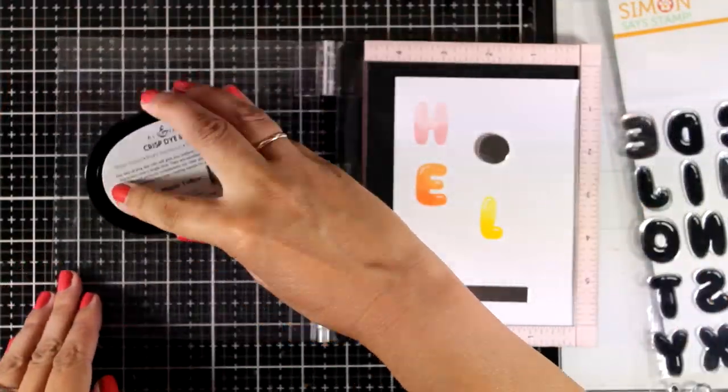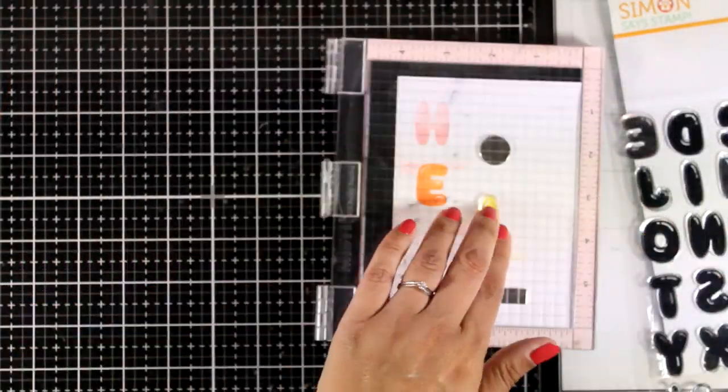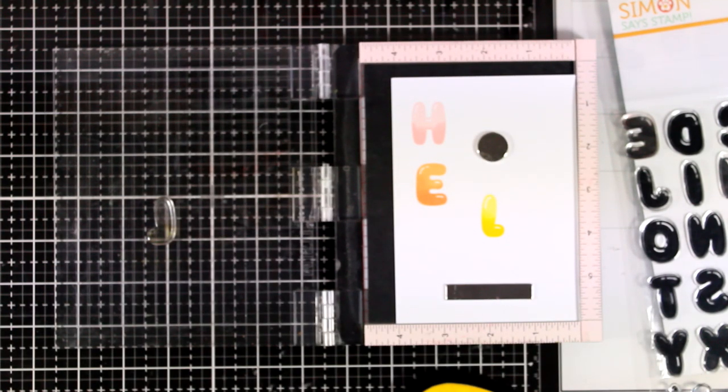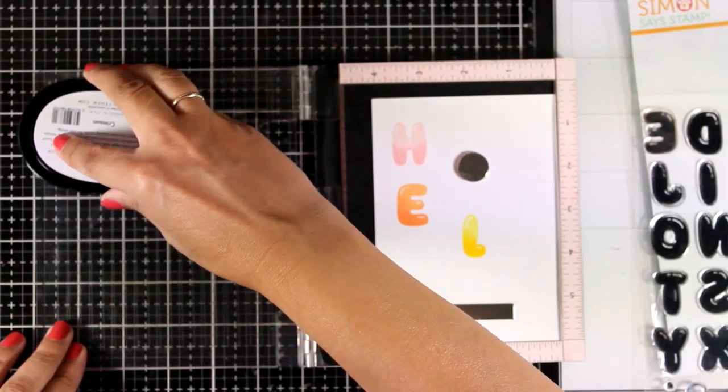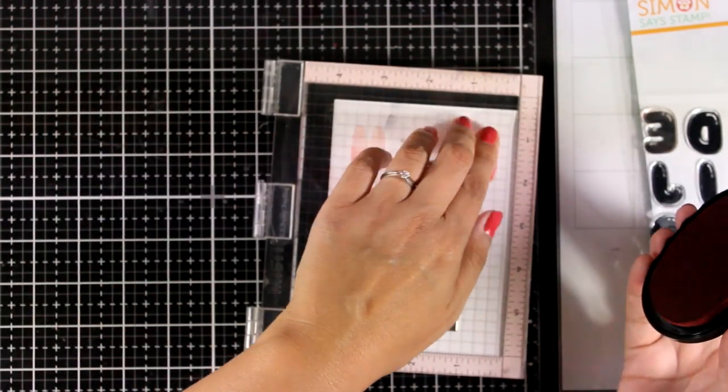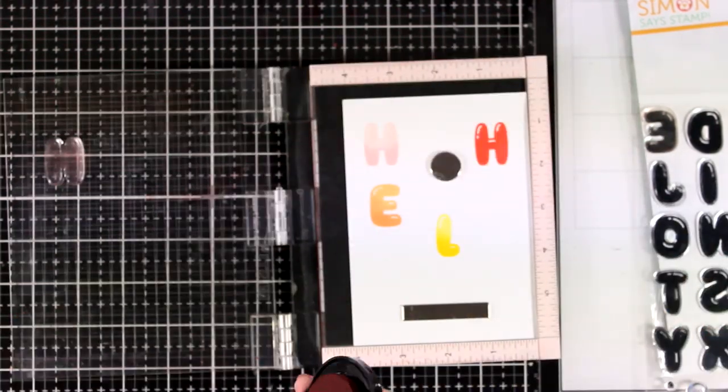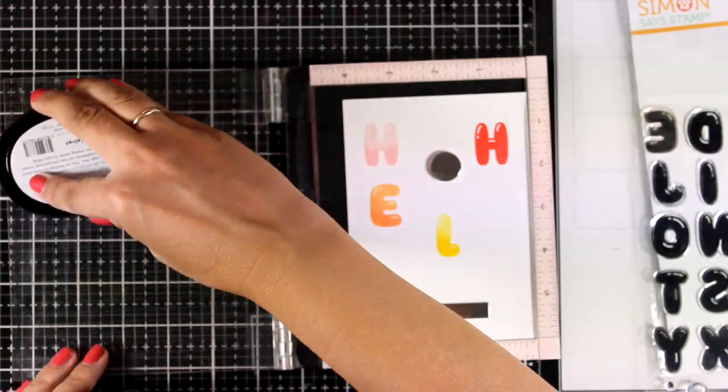Here I am going with yellow for the letter L and this is when I decided that I don't like the letter H. In the beginning I had that idea of using pale colors for my balloons but once I stamped the E and the L which look more vibrant I decided that I need to go back and stamp the H with nice and vibrant reds.